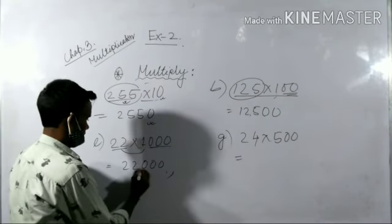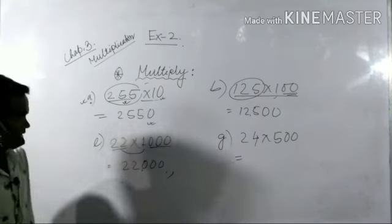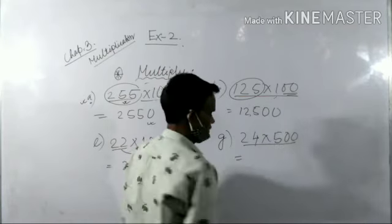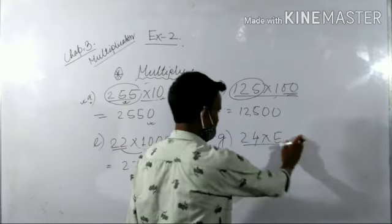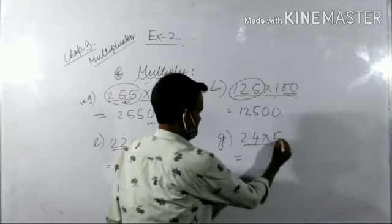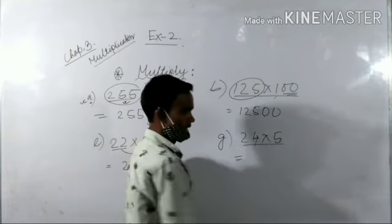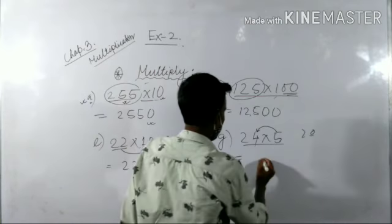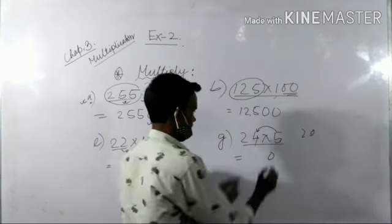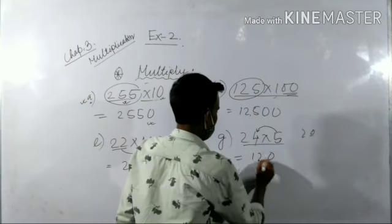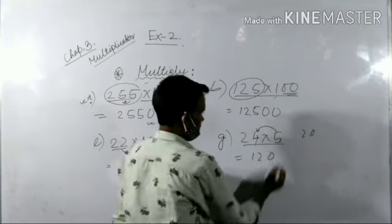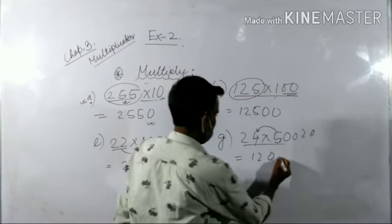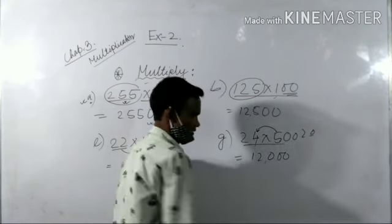Now look at the number. Here, suppose zero is not given. This is 24 multiplied by 5. 4 multiplied by 5 is 20, so write 0 and carry 2. Then 5 times 2 is 10 plus 2 is 12. So this is 120. Now how many zeros do we have after 5? Two zeros. So write again two zeros. So this is your answer: 12000.